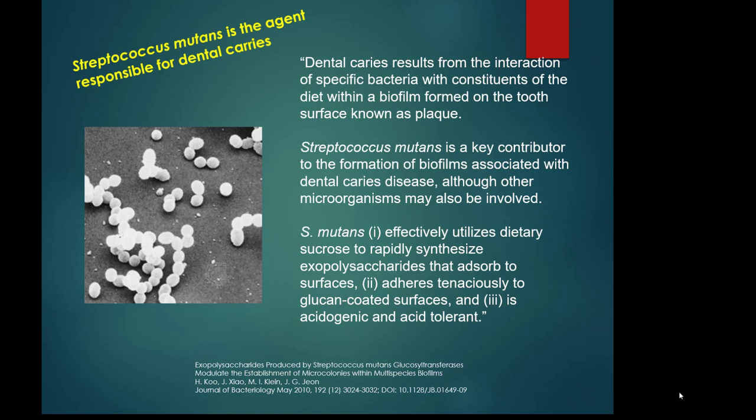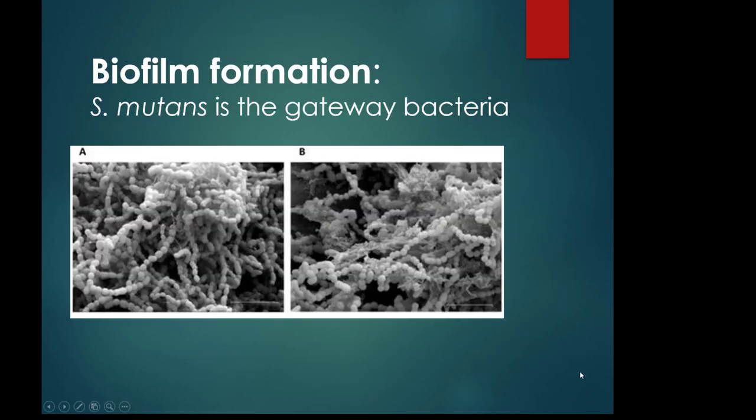Once Streptococcus mutans gets a hold of sucrose and blows out this web of polysaccharides — the slime layer — other bacteria can adhere to it as well, forming the biofilm known as plaque. The plaque traps the bacteria against your teeth. Streptococcus mutans, aggregating in this biofilm, will ferment and produce acid. It is acidogenic — meaning it generates acid — and acid tolerant, meaning it can live in its own acid production, degrading the enamel.